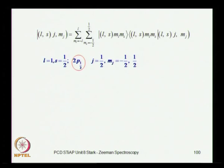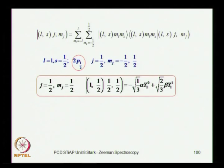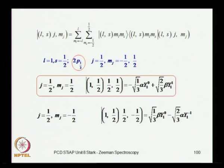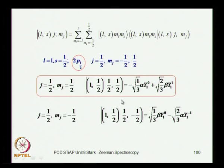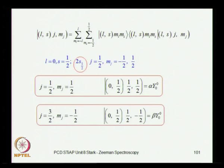For the 2p1/2 states, there are 2 states: one with MJ=+1/2 and one with MJ=-1/2. The state for MJ=+1/2 is a particular linear combination, and for MJ=-1/2 there is a different combination — note there are minus signs in the coefficients. The phase of the coefficients is important, and this is the phase you would miss if you did not use the Clebsch-Gordan coefficient tables correctly. Likewise there are 2 states for 2s1/2, giving all 8 states in total.